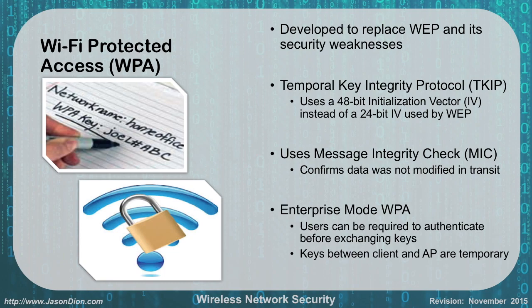After WEP's weaknesses were discovered, WPA — Wi-Fi Protected Access — was introduced. It uses the Temporal Key Integrity Protocol, or TKIP, with a 48-bit initialization vector instead of 24-bit, doubling the length. Unfortunately, with today's technology it can still be cracked, just takes a little longer. WPA also uses the Message Integrity Check, or MIC, which confirms data wasn't changed in transit using a hash value. WPA also supports Enterprise Mode, where users must authenticate before exchanging keys, similar to 802.1X, and keys between client and access point are temporary.